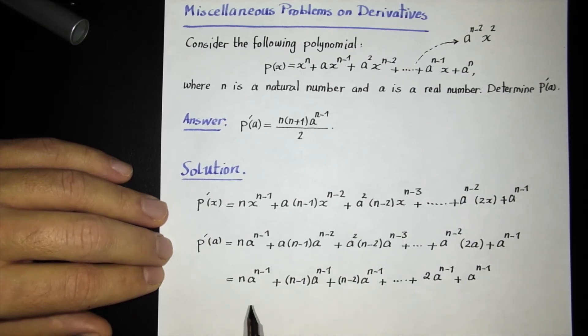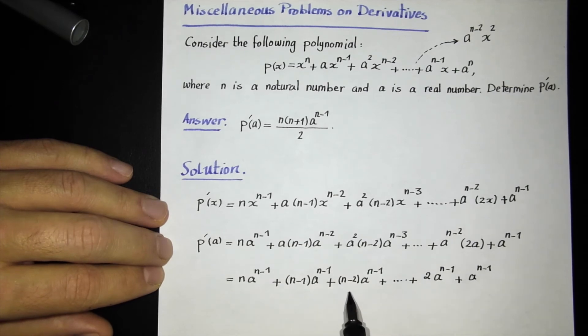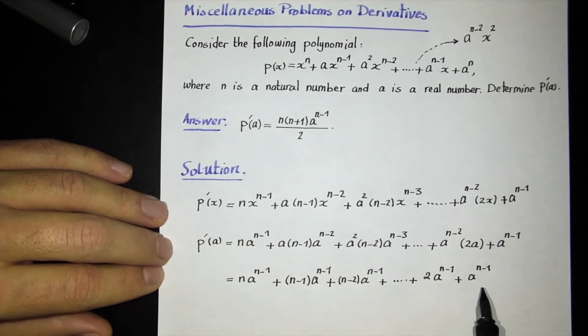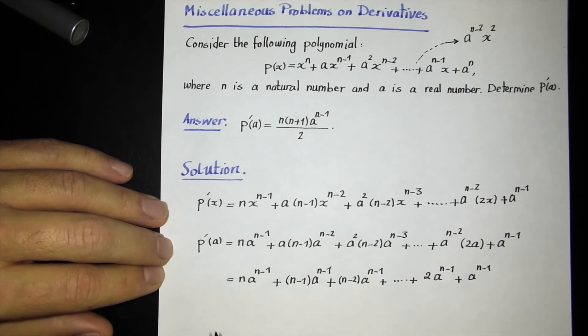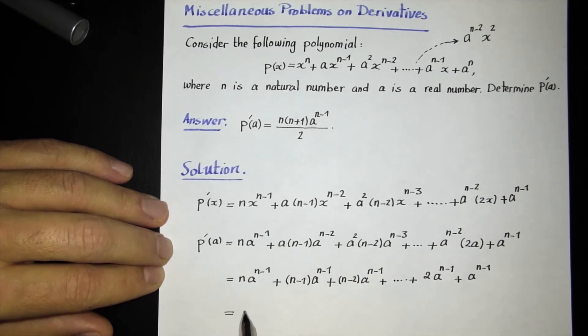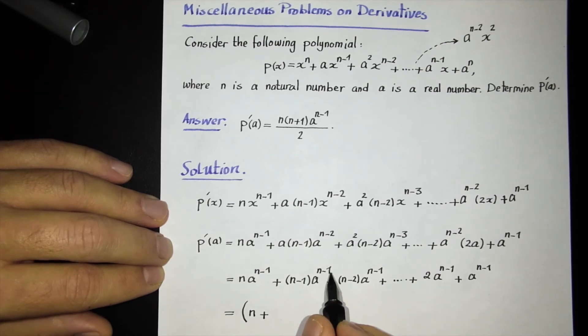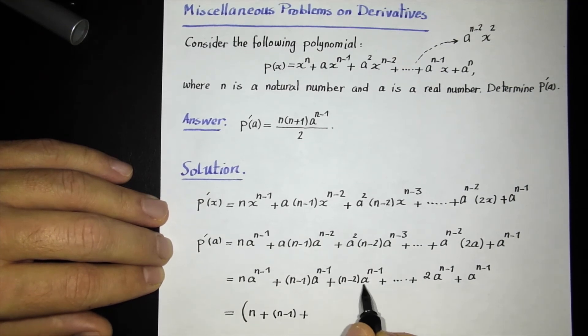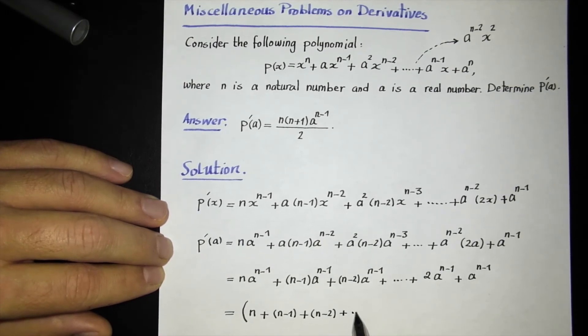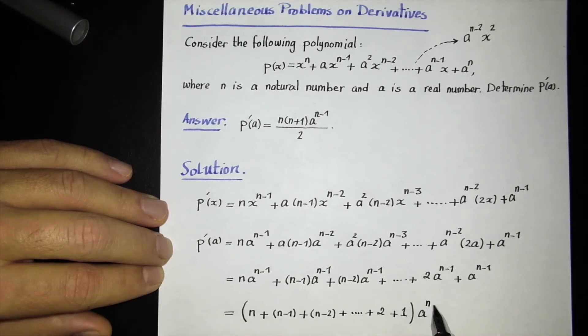The interesting thing that happens here is that you see in all these terms I have a to the n minus 1 in common, so I can pull that out. I can factor it out. So it becomes equal to, if I pull a to the n minus 1 out, only n is left from here. Then if I pull a to the n minus 1 out from here, (n-1) survives, is left actually. The next one, if I take a to the n minus 1 out, (n-2) is left. If I continue this process, from here 2 is left. From the last one, only 1 is left. And I have to write a to the n minus 1.